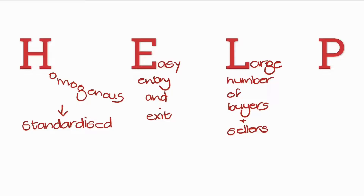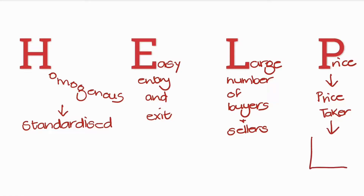And the last characteristic we looked at was the price. The firm is known as a price taker — one who adopts the price as formulated through the interaction of demand and supply, at the equilibrium point between the demand curve and the supply curve. That equilibrium price is the price that the firm will adopt.